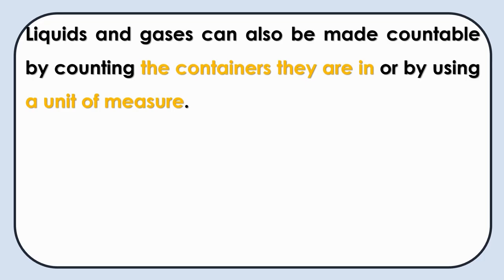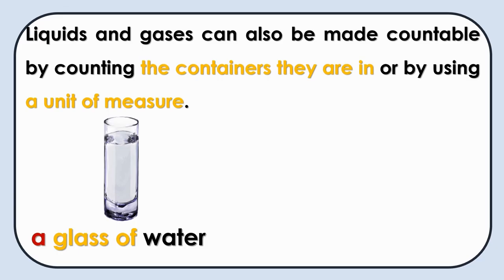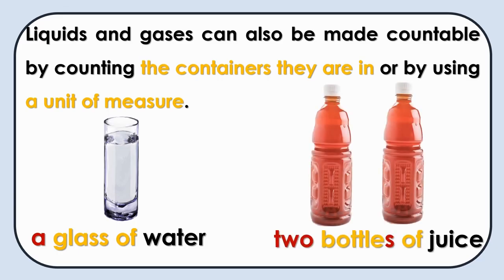Liquids and gases can also be made countable by counting the containers they are in, or by using a unit of measure. For example: a glass of water, two bottles of juice. Water and juice are uncountable nouns — we are not counting them; we are counting the containers they are in.